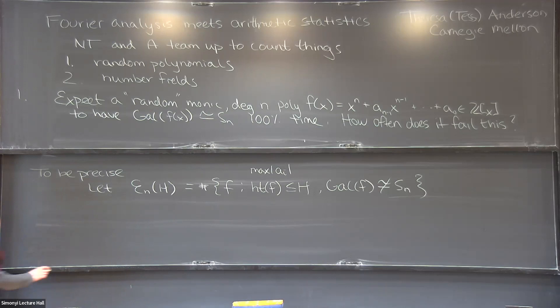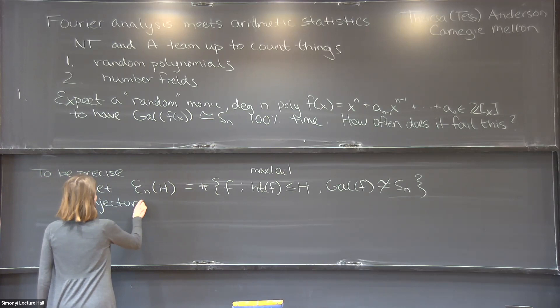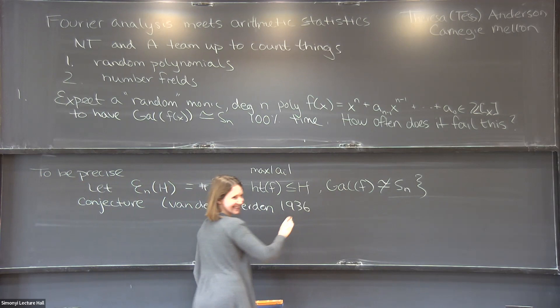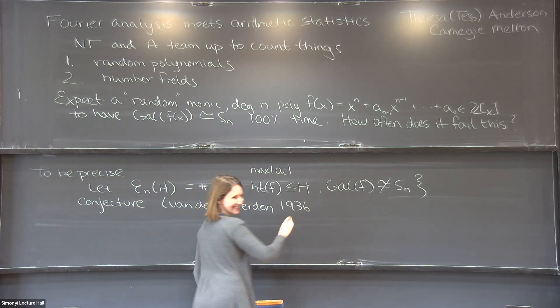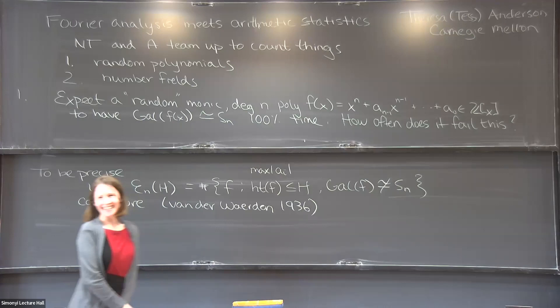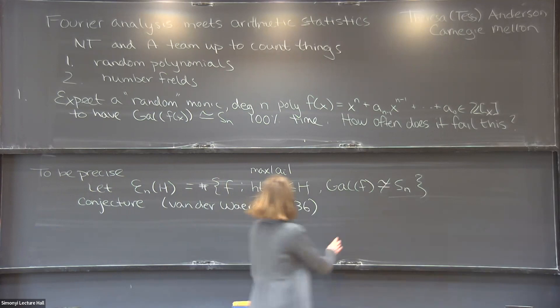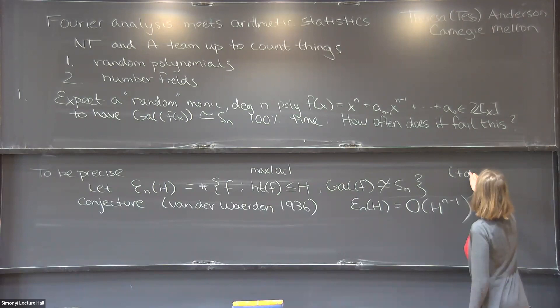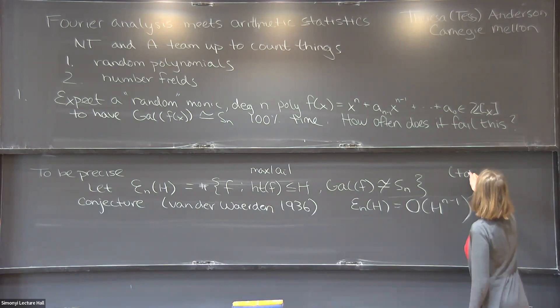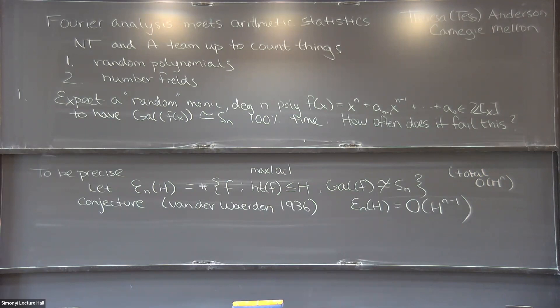The conjecture — posed in 1936 by van der Waerden — is that E_n(H) is O(H^{n-1}). The conjecture is not recent; the solution is recent. The total count of all polynomials is O(H^n), so this represents a power savings in H. One direction — showing E_n(H) is at least H^{n-1} — is fairly easy. The harder direction is what took almost 100 years to prove.